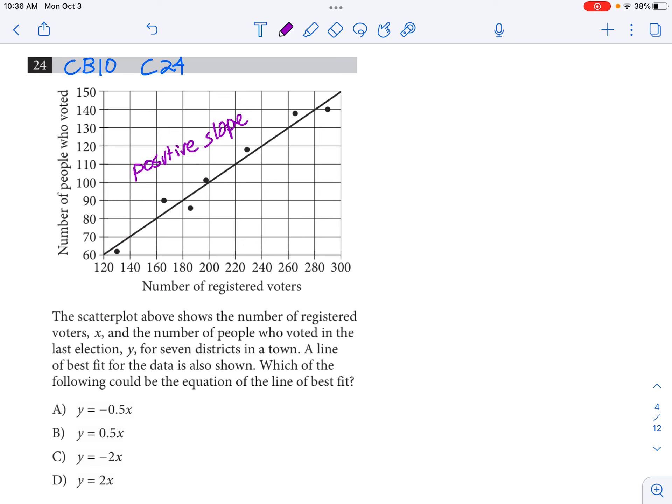A line of best fit for the data is also shown. Which of the following could be the equation for the line of best fit? Well if we have a positive slope it's probably not going to be A and it's probably likewise not going to be C because these have negative slopes, so not A or C.